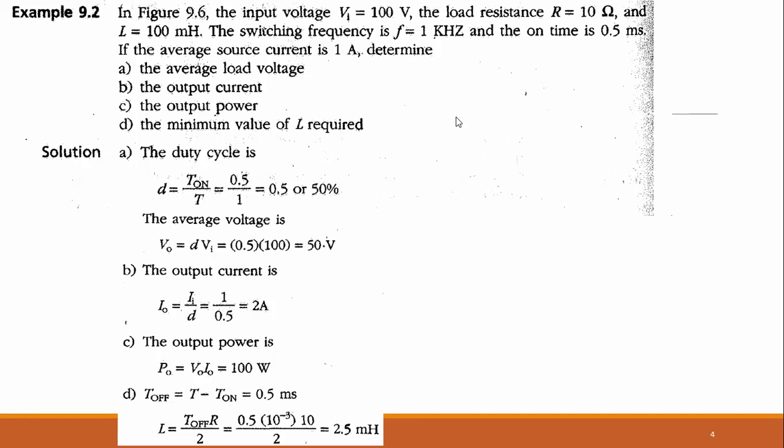For the average load voltage, we use the buck converter formula: V_out equals D times V_in. With D = 0.5 and V_in = 100 volts, we get V_out = 50 volts.